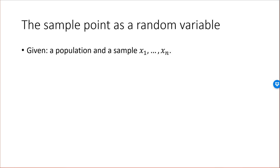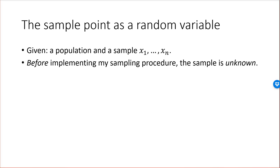So I have a population and I have a sample. Remember, it's common to denote the actual measurement as our sample, even though the sample actually is the collection of sample points, such as the collection of individuals. One way we can look at this is that before I implement my sampling procedure to collect my sample, the values x1 through xn are unknown. So we can say that before the procedure the sample is actually unknown — I don't know which sample I will actually end up with.